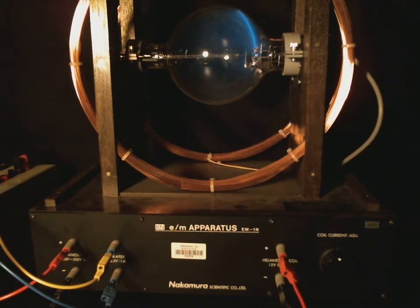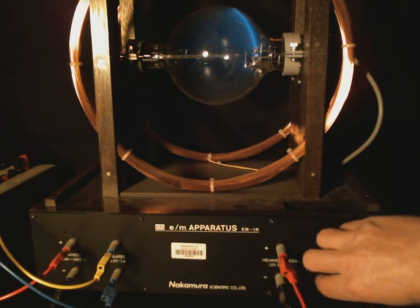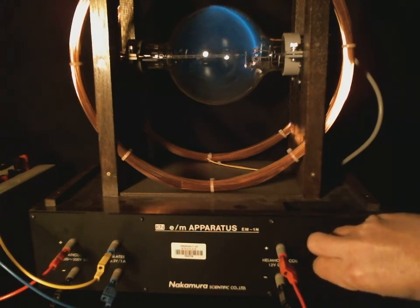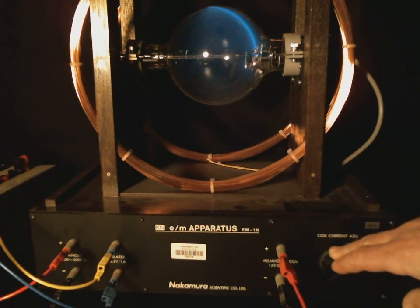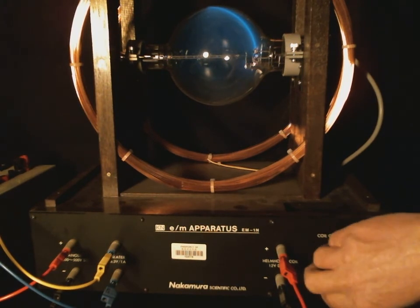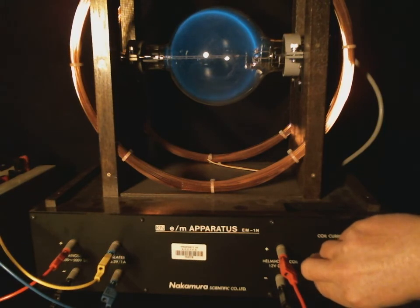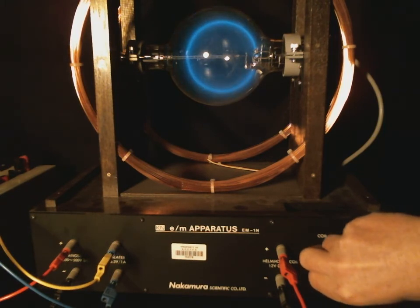Now, let's see what happens when I turn up the magnetic field even higher. The beam is bending more and more strongly, and if I keep on going, I get a circular loop.